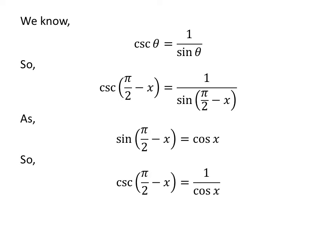Let us apply the above identities to the expression for cosec(π/2 - x). So cosec(π/2 - x) equals 1 over cos x.